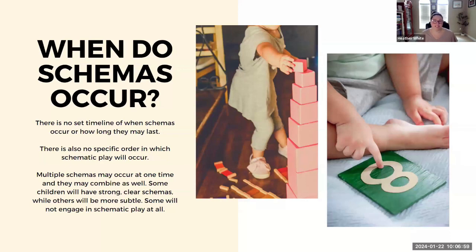When do schemas take place? There is no set timeline of when schemas occur or even a specific delineation of how long they might last. They don't occur in a specific order, and in fact multiple schemas can be occurring at one time and might even combine. Some children will have very clear, easily observable schemas, while others might be more subtle, and some might not even engage in schematic play at all. Every child is different.